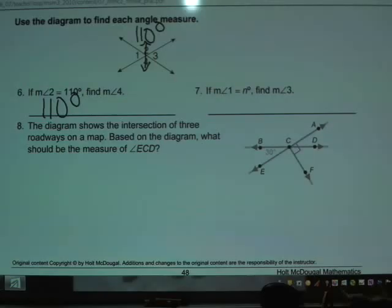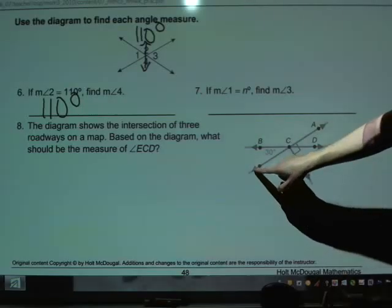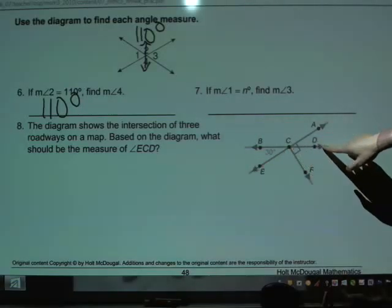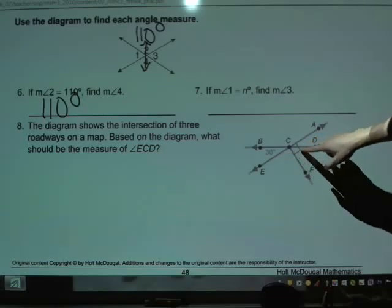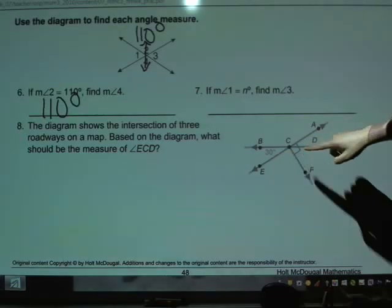Number 8 says, the diagram shows the intersection of three roadways on a map. Based on the diagram, what should be the measure of angle ECD? So angle ECD starts here, runs to C, and then off to D. So ECD is this entire segment down here.